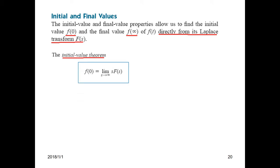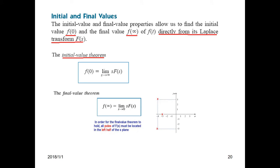The initial value theorem states that f(0) equals the limit as s approaches infinity of sF(s). The final value theorem is opposite: f(∞) equals the limit as s approaches 0 of sF(s). Note that for f(0) we take the limit to infinity, and for f(∞) we take the limit to 0.